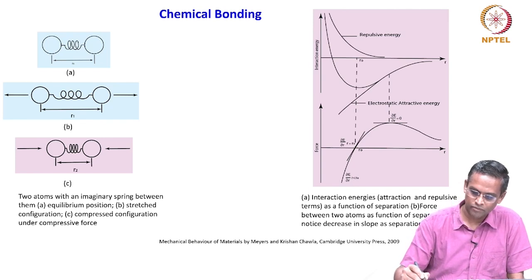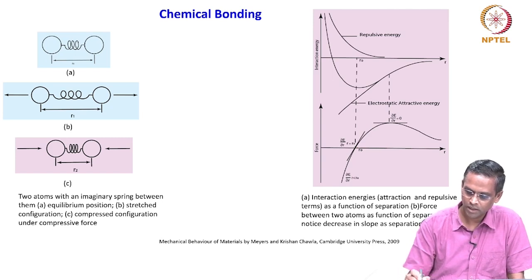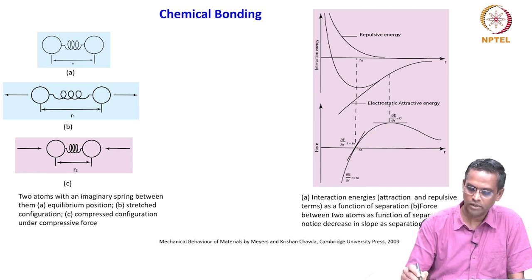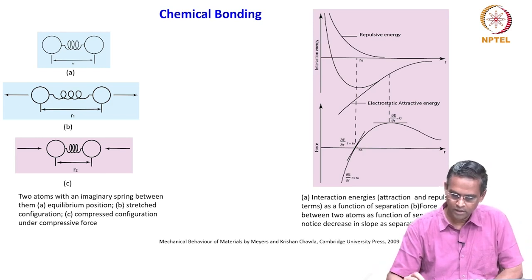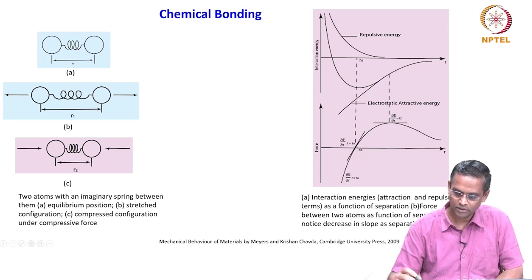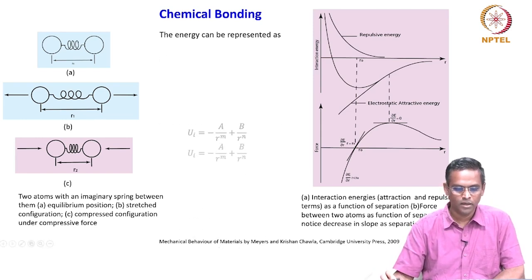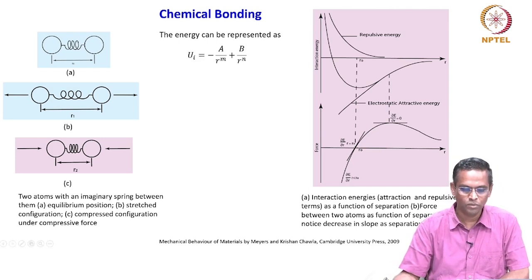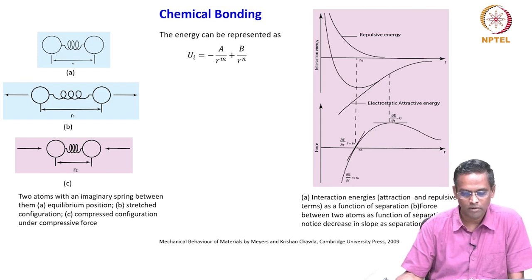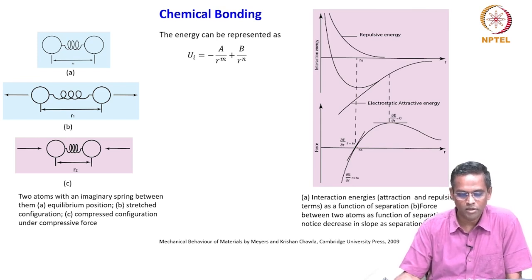As the separation between two atoms becomes larger, the slope changes and reaches a maximum — the derivative is zero. The energy can be represented by the formula Uᵢ = −A/Rᵐ + B/Rⁿ, where the first term is attraction and the second is repulsion.